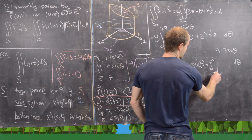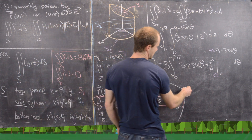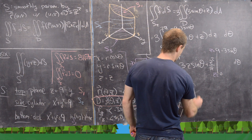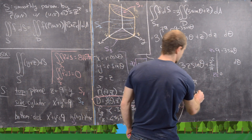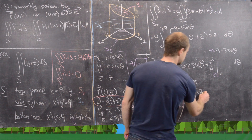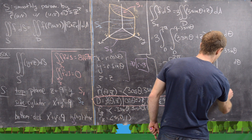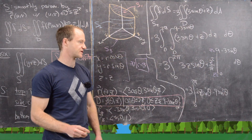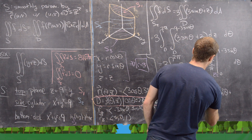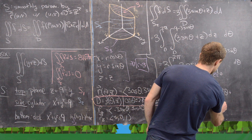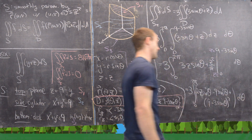Taking the inner z-integral: the antiderivative is 3z sin θ + z²/2, evaluated from 0 to 9 − 3 sin θ. Plugging in z = 9 − 3 sin θ gives 27 sin θ − 9 sin²θ plus (9 − 3 sin θ)²/2. Plugging in z = 0 gives 0.